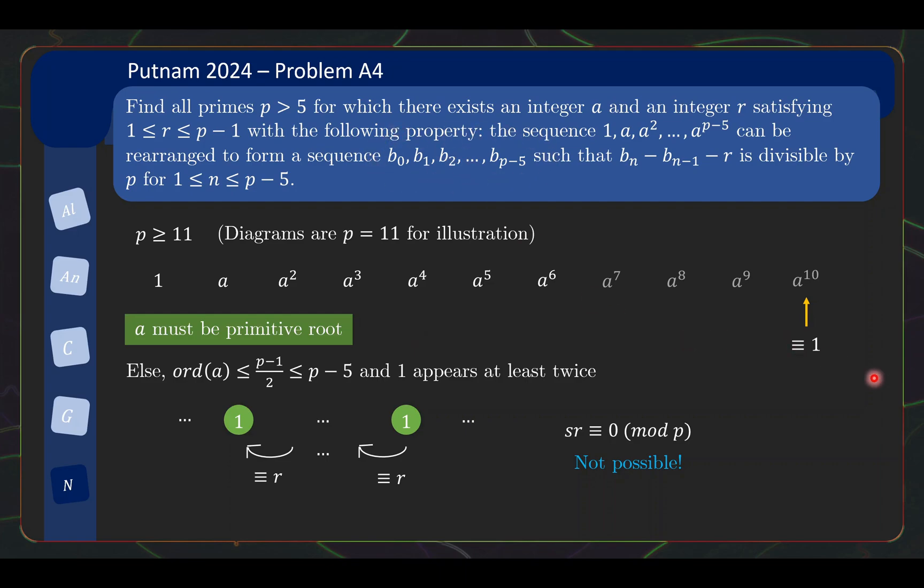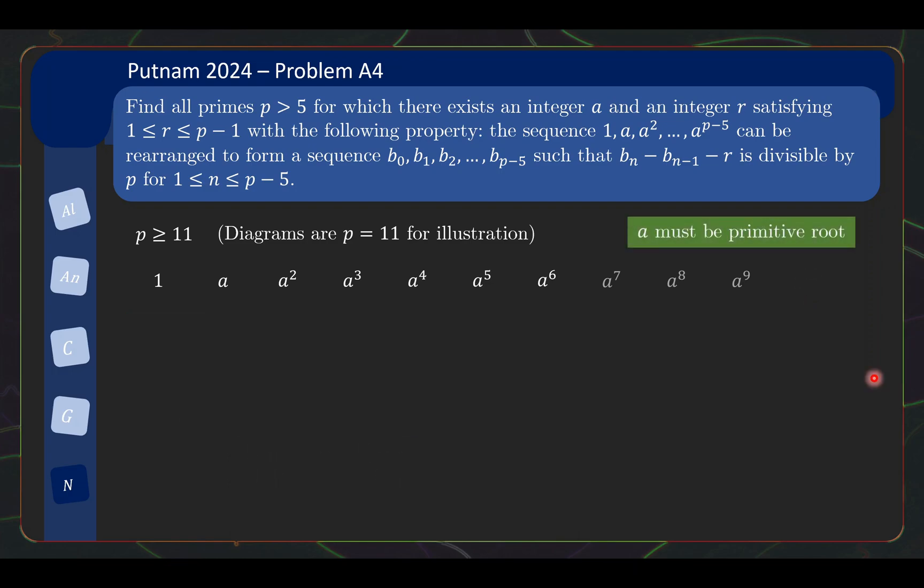So we have just learned that a must be a primitive root, which means that indeed your numbers from 1 to a^(p-2) are all distinct. There is no cycle back, no smaller cycle. Then a^(p-1) is congruent to 1 and so on. So what you have then is that this is 1, 2, ..., p-1 in some order, but you drop the highest 3 powers because you are only interested up to a^(p-5). So p-2, p-3, p-4, you are interested in a^(p-5).